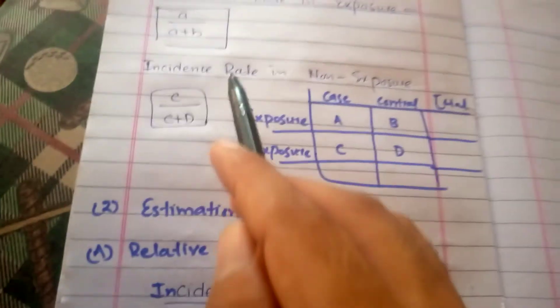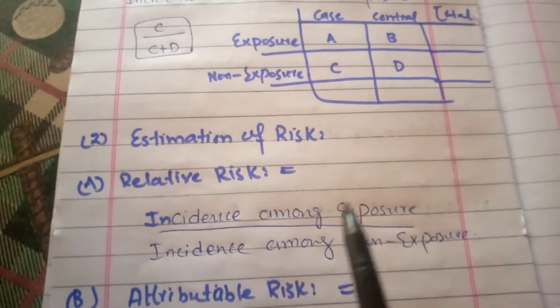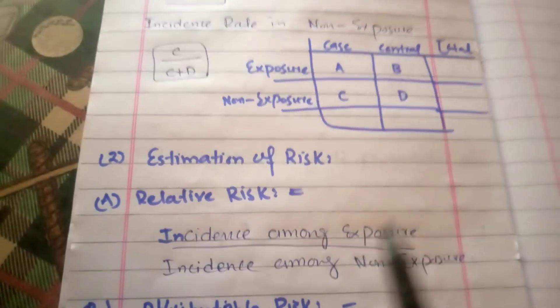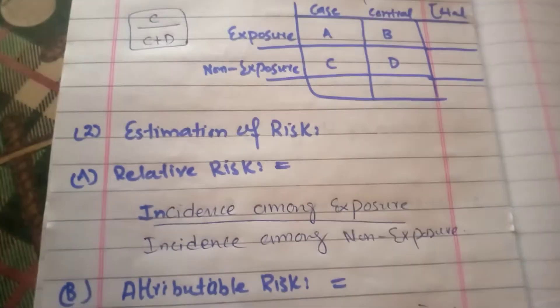Incidence rate in exposure and non-exposure - one divided by another is relative risk. Exposure is more risky than non-exposure, but how much?